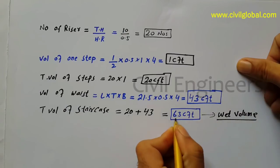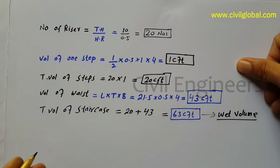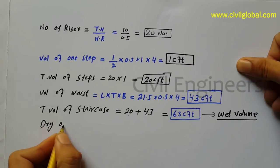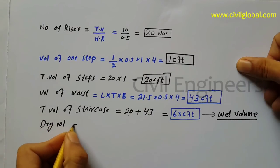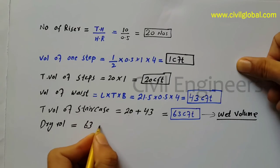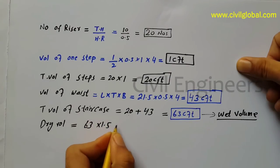This 63 cft is the wet volume. Now I have to convert it to dry volume. Dry volume equals 63 multiplied by 1.54.